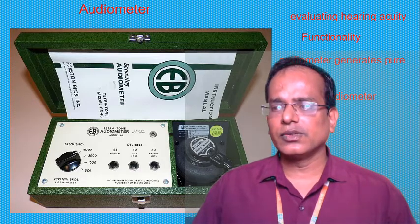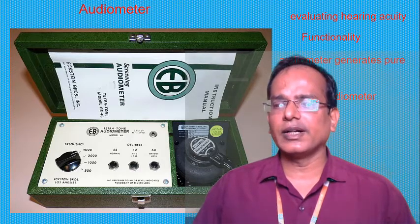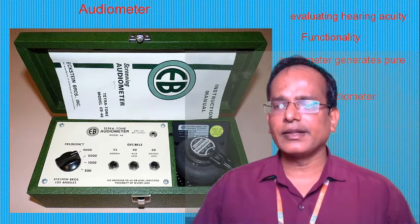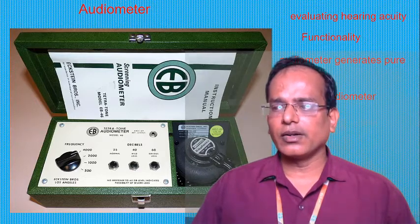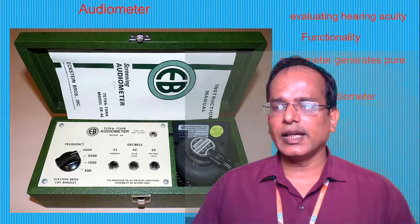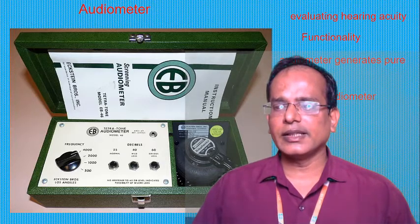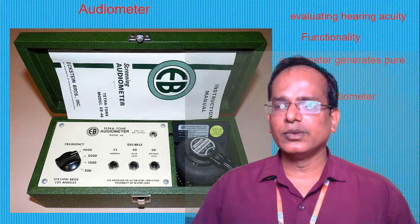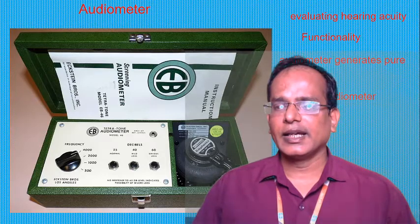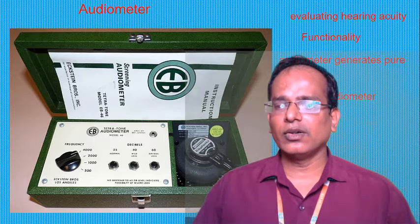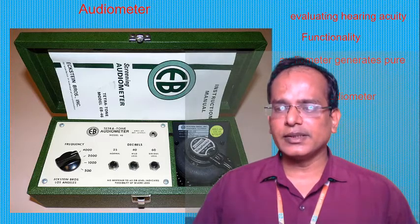Objective methods are based on recording electrical signal activities at various stages along the auditory path from the cochlea to the cortex. These methods do not need the active participation of the individual — we are not asking the patient to do any activity. We measure electrical signals to determine hearing loss.